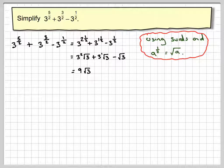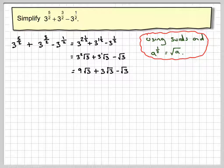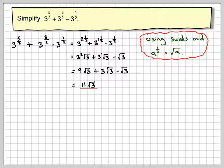3 squared is 9, so we have 9 root 3 plus 3 root 3 minus root 3. 9 root 3 plus 3 root 3 minus root 3 gives you 11 lots of root 3.